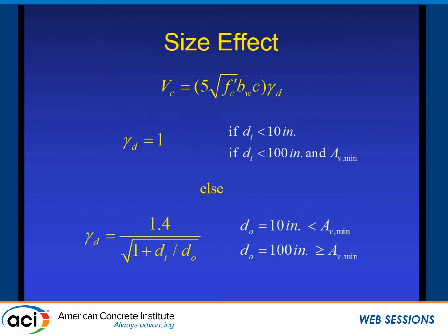When talking about unification, we considered very large beams — particularly those exceeding 100 inches in depth. The basic VC equation includes a size effect factor gamma_D. For sections less than 10 inches effective depth with no reinforcement, or with minimum stirrup reinforcement and depth less than 100 inches, gamma_D equals 1, covering most beams. Otherwise, a size effect must be considered using the expression based on ACI 446.